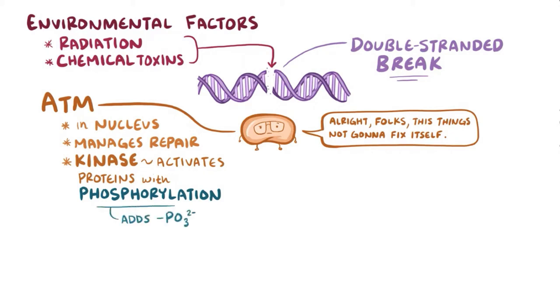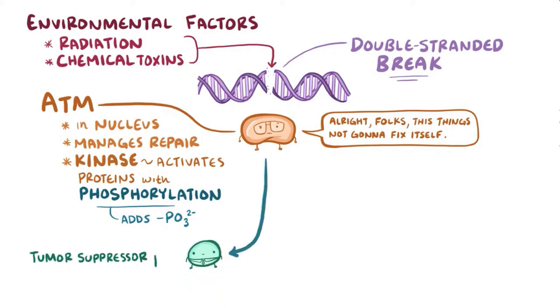So at the site of the double-stranded break, ATM phosphorylates proteins like the tumor suppressor protein P53, which stops the cell from reproducing.